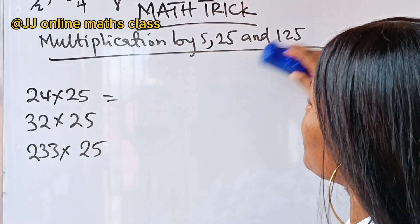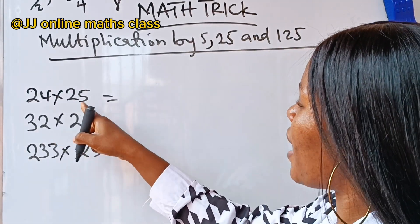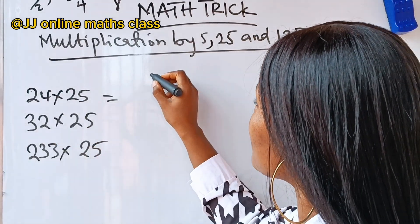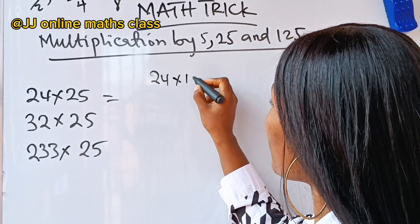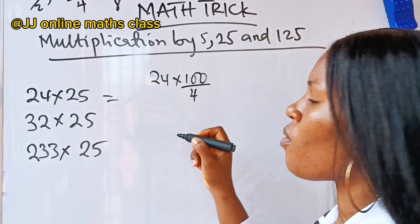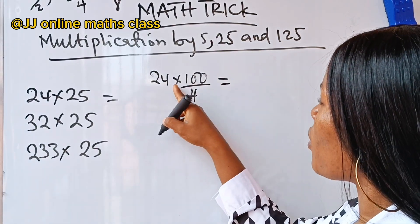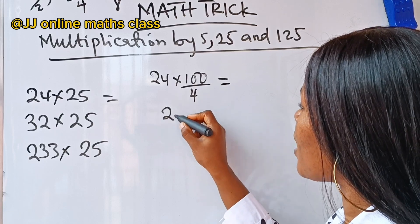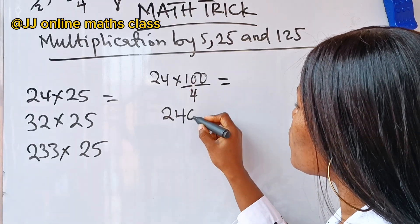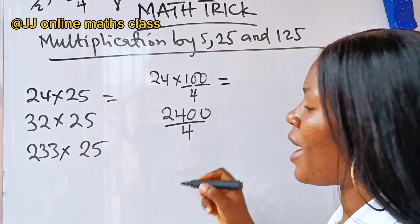So, I'm going to apply this logic here. 24 multiplied by 25 is the same thing as 24 multiplied by 100 over 4. Now, 24 multiplied by 100 is what? Just write your 24, add two zeros in front of it, and divide by 4.